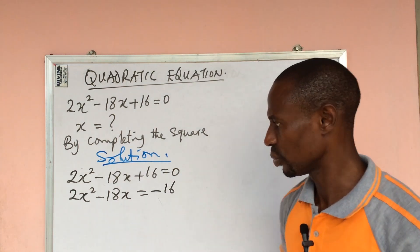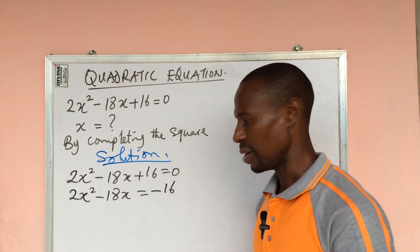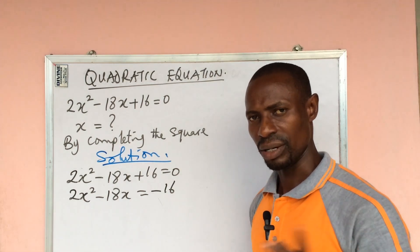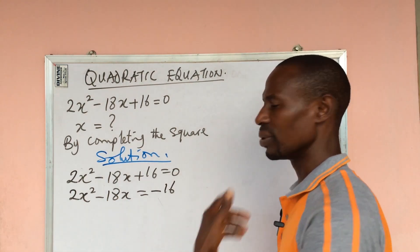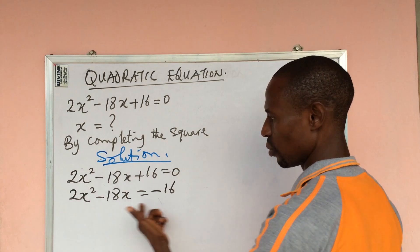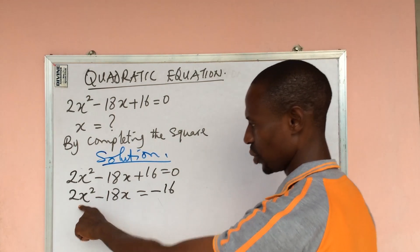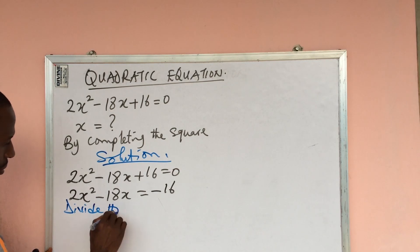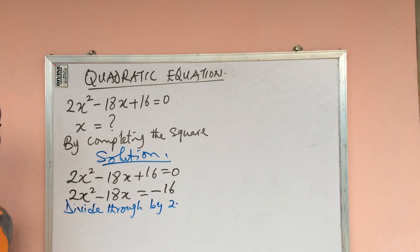Now the next thing we do is to look at the coefficient of x². The coefficient of x² must be unity, must be one. So in order to make the coefficient of x² here to be one, we have to divide through by the coefficient of x². So the coefficient of x² is two.